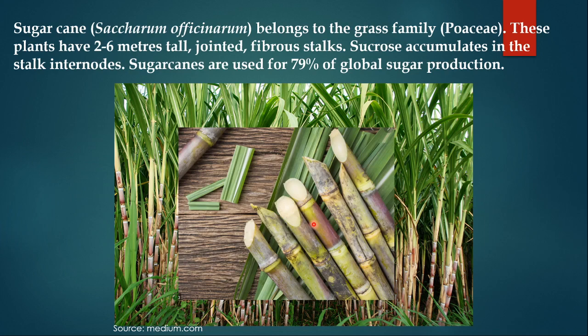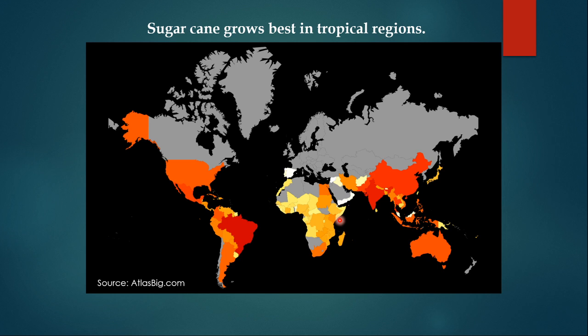Here is a distribution map of sugarcane. This crop is cultivated in many countries and India is one of the major producers. This map should give you an idea about the importance of sugarcane in agricultural economy.